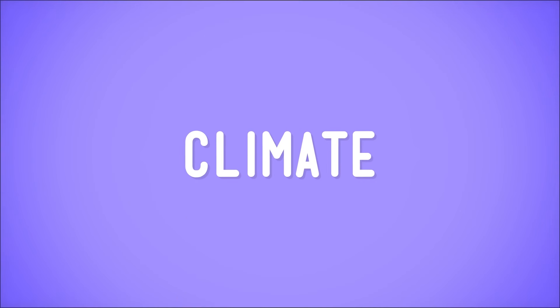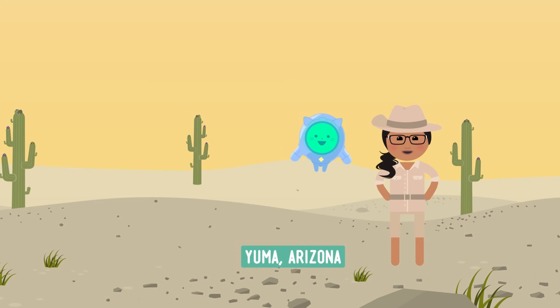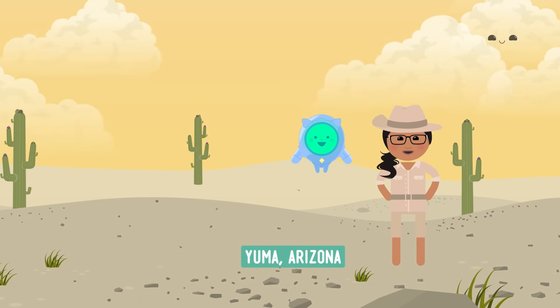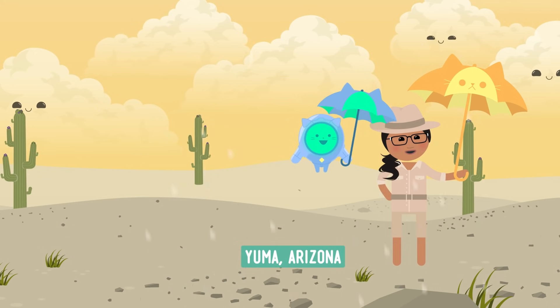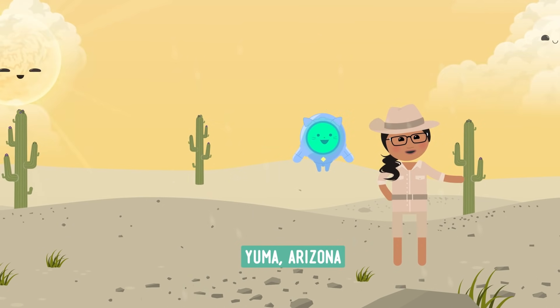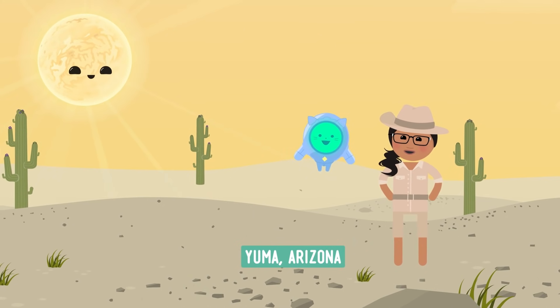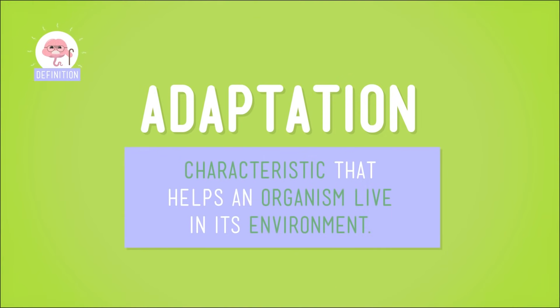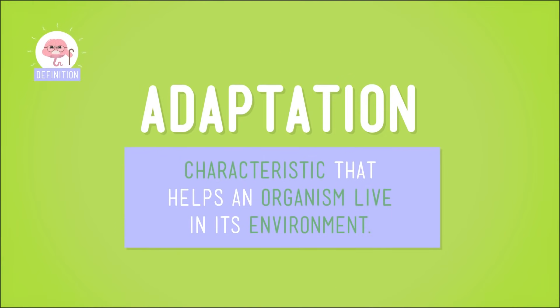First, let's talk climates. Through little me's travels, we found out that Yuma, Arizona had a hot and sunny climate. We decided this after finding out that although it rained once or twice during my long stay, most of the days were hot and dry. Now, the plants and animals that live in Yuma's hot, dry, sunny climate have adaptations that help them live in that desert environment.